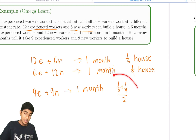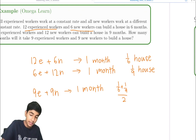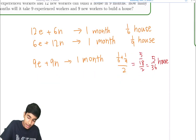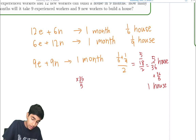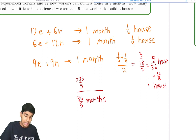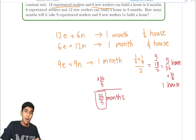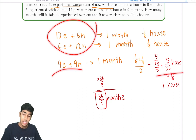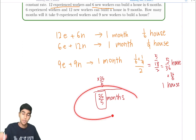So in one month, 9 experienced and 9 new workers can build one-sixth plus one-ninth divided by 2. That's 5 over 18 divided by 2 — 5 over 36 houses. To build one house, we multiply by 36 over 5 months. So 9 experienced and 9 new workers can build a house in 36 over 5 months. The key insight was getting one-sixth and one-ninth, averaging the work rates, then finding months per house.